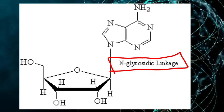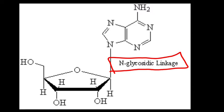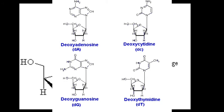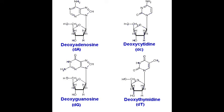So nitrogen base and pentose sugar form nucleoside. As there are four different types of nitrogen bases, nucleosides are also of four different types. The four different types of nucleosides in DNA are: deoxy adenosine, deoxy guanosine, deoxy cytosine, and deoxy thymidine.